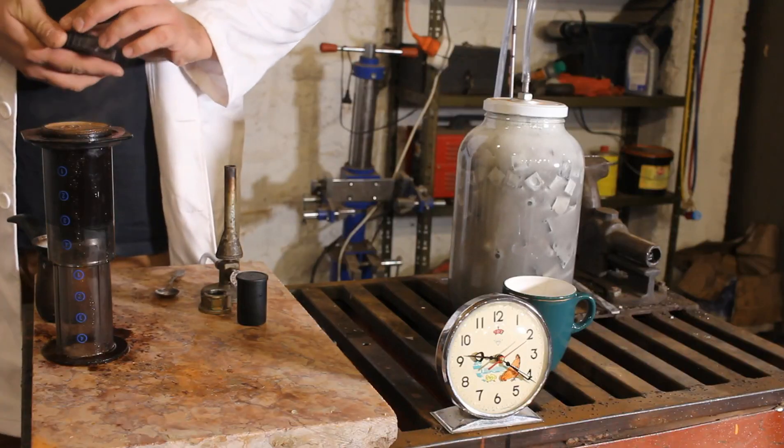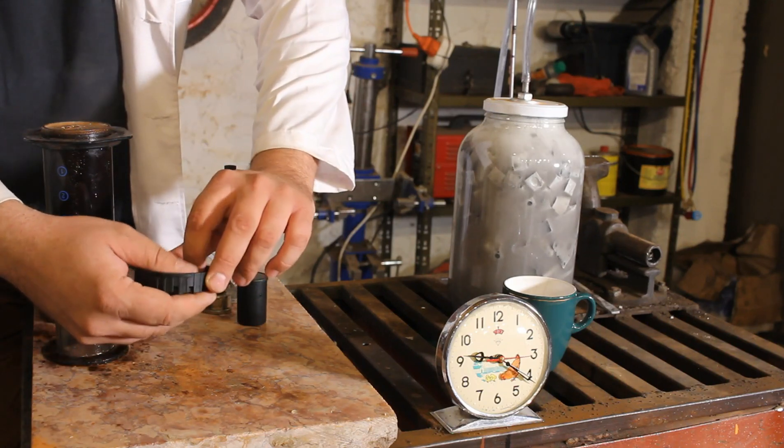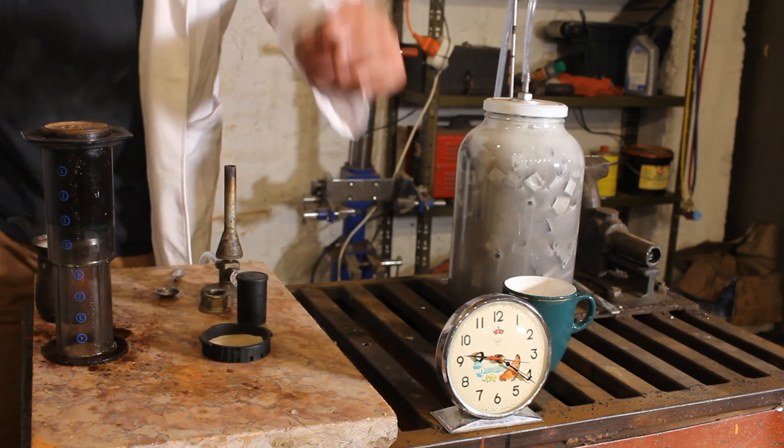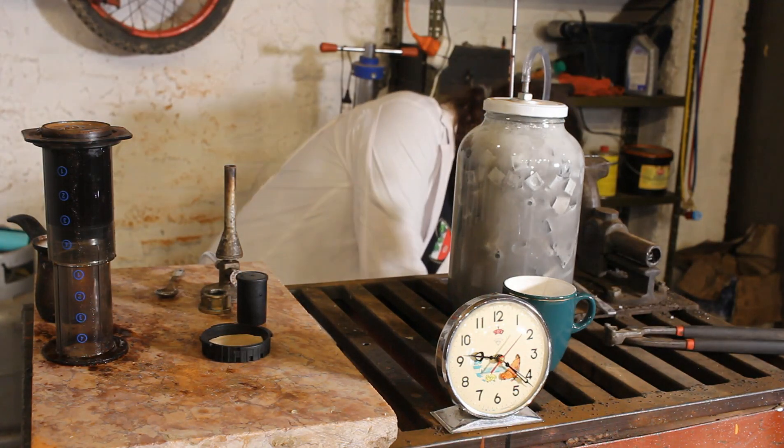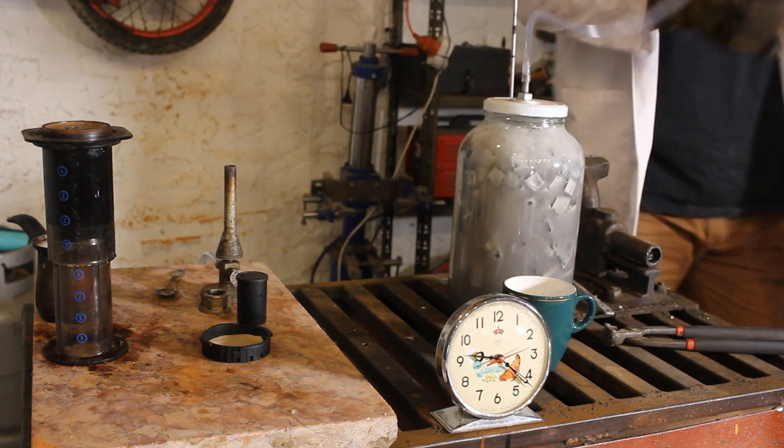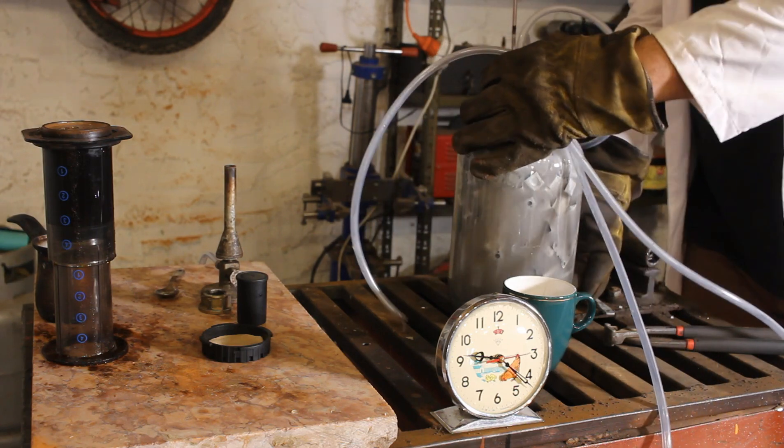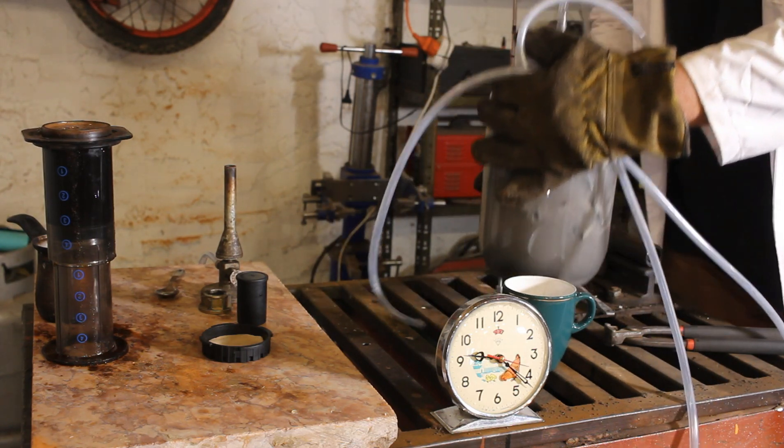Time to put the filter into the filter holder, by the way this filter is homemade as I ran out of original Aeropress ones. As the coffee grounds settle I disconnect the bubbler and I'm gonna take the main jar somewhere safe. There I'm gonna open the top cap and pour all the sodium hydroxide solution into a chemical resistant container, thus stopping the reaction.